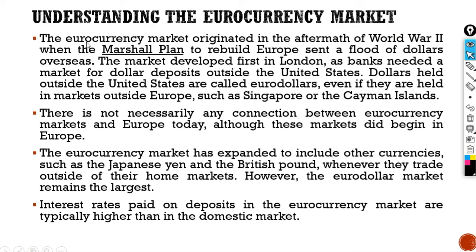The Euro currency market originated in the aftermath of World War II when the Marshall Plan was enacted to rebuild Europe. The market developed first in London as banks needed a market for dollar deposits outside the United States. Dollars held outside the United States are called Euro dollars even if they are held in markets outside Europe, such as Singapore or the Cayman Islands. There is not necessarily any connection between Euro currency market and Europe today, although both markets began in Europe. The Euro currency market has expanded to include other currencies such as Japanese yen and the British pound whenever they trade outside of their home market. However, the Euro dollar market remains the largest.